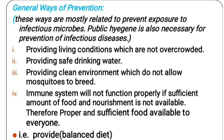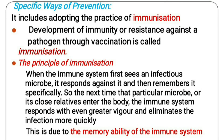Specific ways of prevention: the immune system of our body reacts against specific microbes, recognizes them and kills them. Immunity is the ability of our body to resist disease — it can be inborn or acquired after birth. When the immune system first sees an infectious microbe, it responds against it and remembers it specifically. The next time the particular microbe or its close relatives enter the body, the immune system responds with greater vigor and eliminates the infection more quickly, with the help of antibodies.